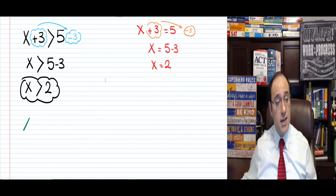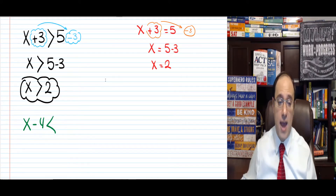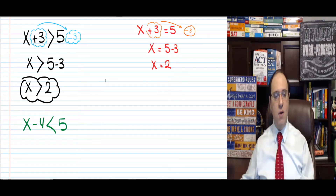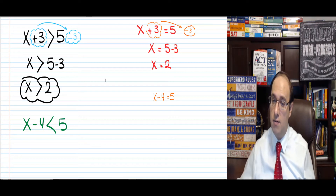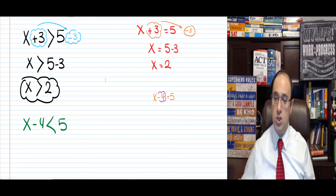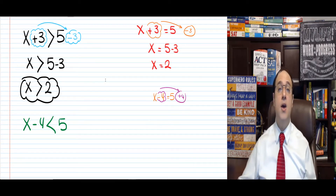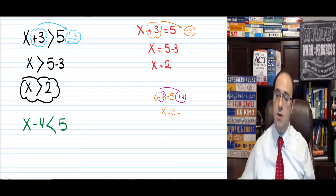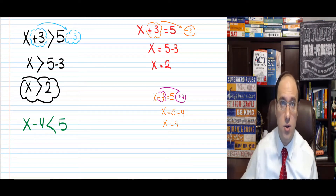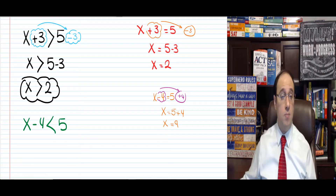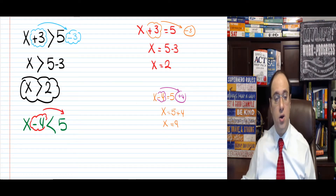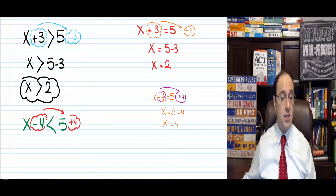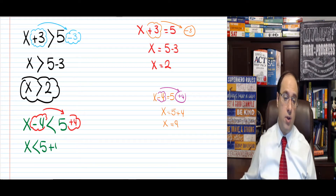Let's take another example: x minus 4 is less than 5. Let's first recall how we do this as an equation — x minus 4 equals 5. We get rid of the minus 4 because we just want x on the left; it goes to the other side as plus 4, leaving x equals 5 plus 4, so x equals 9. Now doing the same with the inequality: move the minus 4 to the other side as plus 4, which leaves x is less than 5 plus 4, meaning x is less than 9.